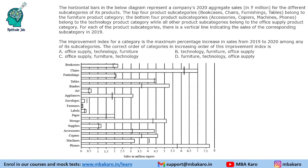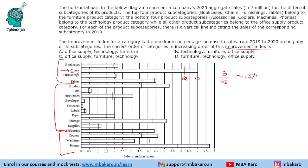Question 4: The improvement index for a category is the maximum percentage increase in sales from 2019 to 2020 among any of its subcategories. We need the correct order of categories in increasing order of improvement index. Starting with furniture: chairs had the highest percentage increase in that category, going from about 62 to 70, so roughly 8 by 62, which is about 13%.